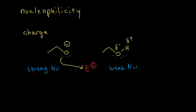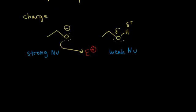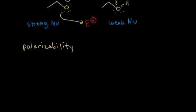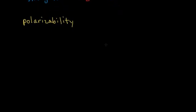There's another factor when figuring out nucleophilicity, and that is the polarizability of your molecule — the ability of something to be polarized, usually due to external influences. Let's use ethanol as our example and compare it to the sulfur analog of ethanol, which means replacing that oxygen with a sulfur. Sulfur is in the same group as oxygen on the periodic table, so it's going to react in similar ways.